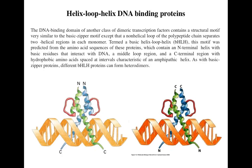Hello everyone, let's talk about the second type of DNA binding domains, which is known as helix-loop-helix DNA binding proteins. We have previously talked about helix-turn-helix DNA binding proteins. This is pretty identical with some difference in the structure, which is why we call it helix-loop-helix DNA binding proteins. These are proteins which have a specific DNA binding domain consisting of two alpha helices connected to each other.